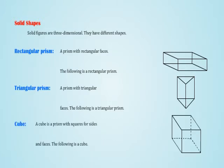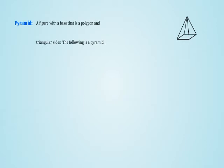8. Cube: A cube is a prism with squares for sides and faces. The following is a cube. 9. Pyramid: A figure with a base that is a polygon and triangular sides. The following is a pyramid.